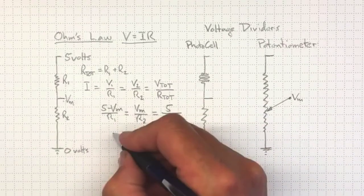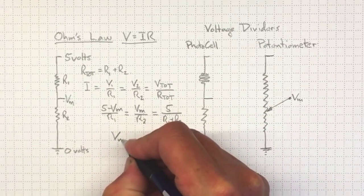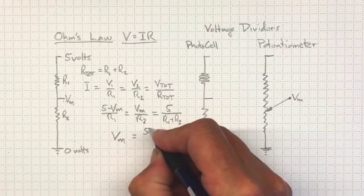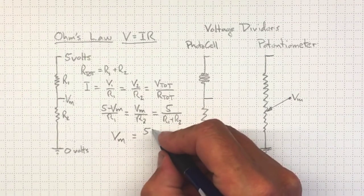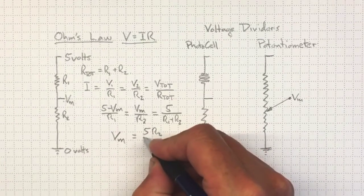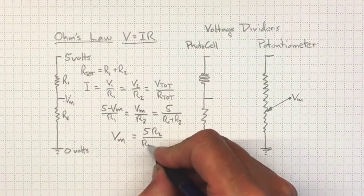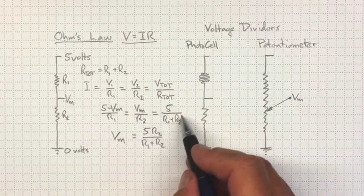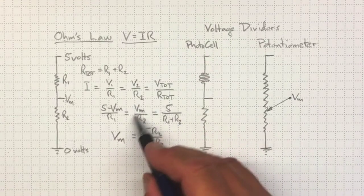So as a result, we'll expect the measured voltage in between to be equal to five times R2 divided by R1 plus R2, just going from this equation here, these two values here.